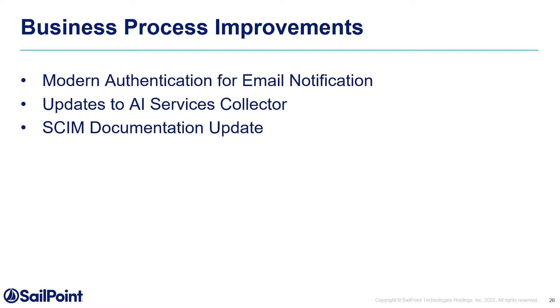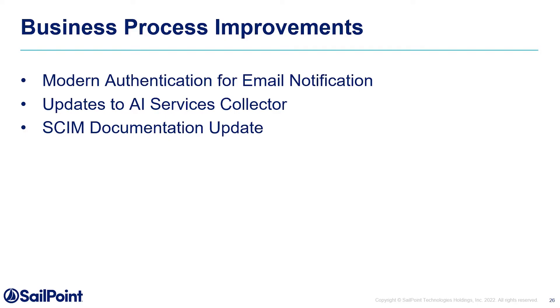Here are a few additional enhancements going into 8.3. The first is modern authentication for email notifications — 8.3 will have the ability to support OAuth 2.0 authentication protocol for email notifications for any systems that require that authentication type. Second, the services collector mechanism, which sends data from IdentityIQ to our AI services module, has undergone extensive improvements for both speed and efficiency. Finally, for the many customers that utilize our SCIM API endpoint, we've heard you and have worked on improving documentation to make that framework easier to work with and configure. From here, I'll hand off to Jordan to take a quick look at how we're thinking about IdentityIQ beyond 8.3.